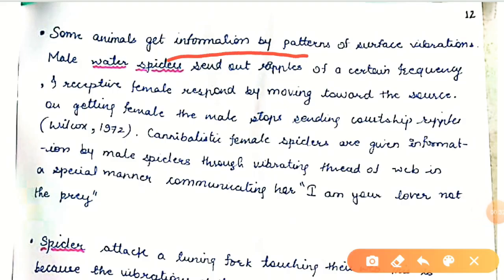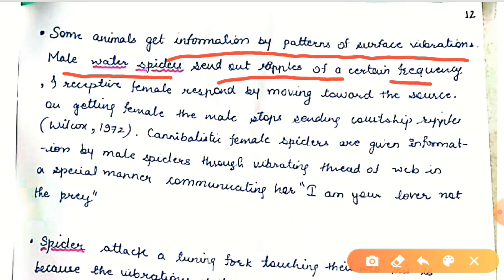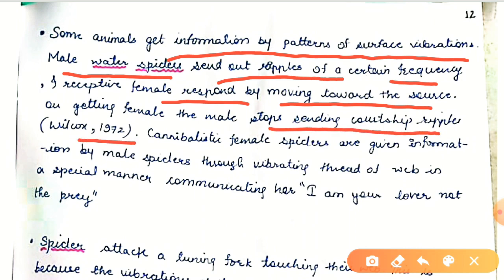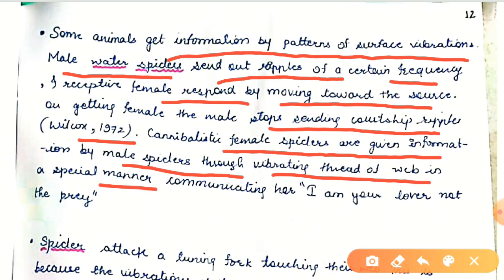Some animals get information by patterns of surface vibrations. For example, male water spiders send out ripples of a certain frequency, and receptive females respond by moving toward the source. On getting the female, the male stops sending courtship ripples — Wilcox, 1972. Cannibalistic female spiders are given information by male spiders through vibrating threads of the web in a special manner, communicating that 'I am your lover, not your prey.'